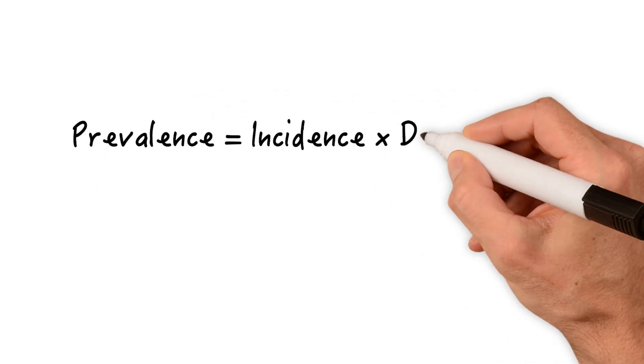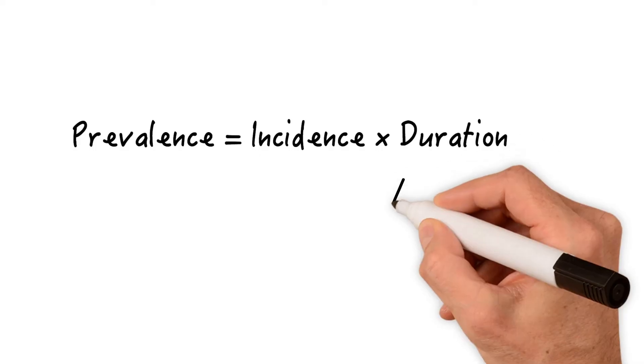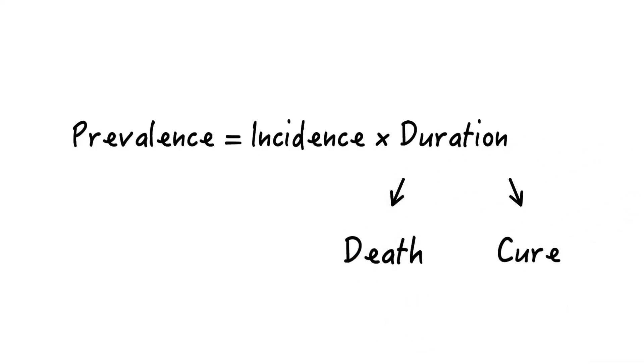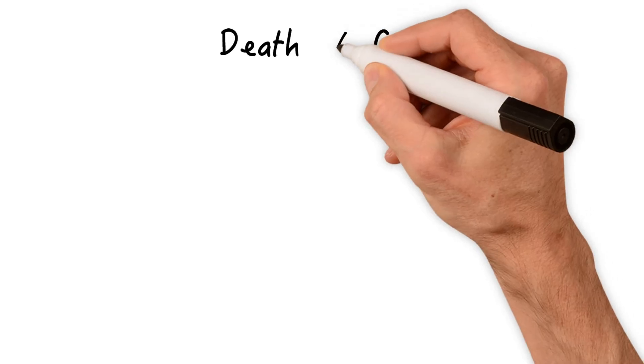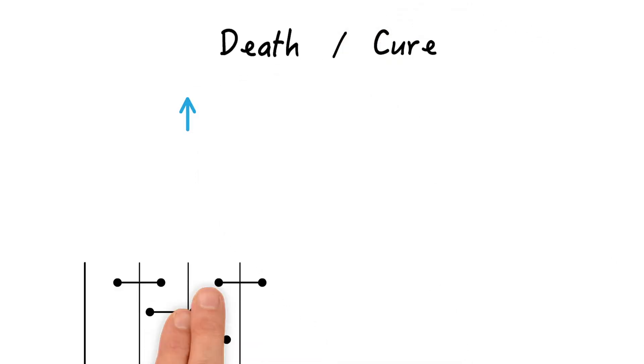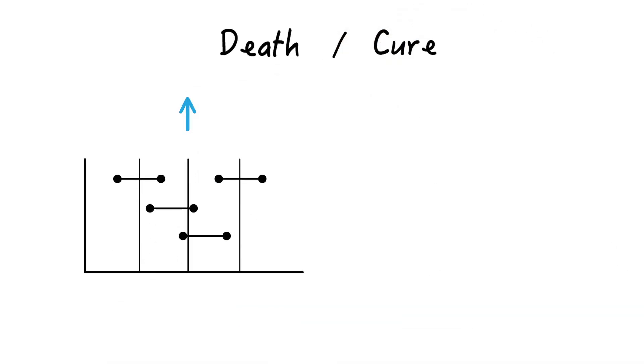So prevalence is incidence times duration and duration is determined by the death rate or the cure rate. If the death rate or the cure rate go up, then the disease duration will be shortened. If death rate and cure rate go down, disease duration will be prolonged.